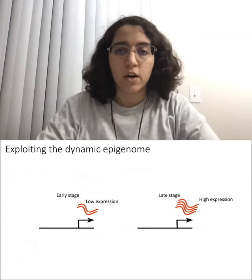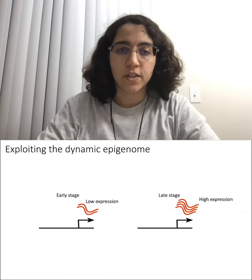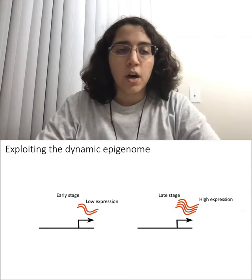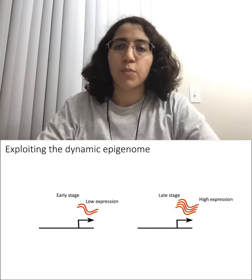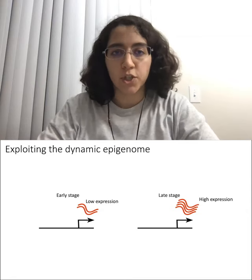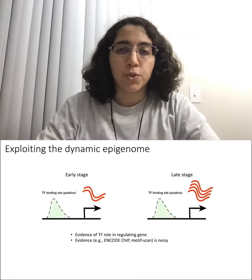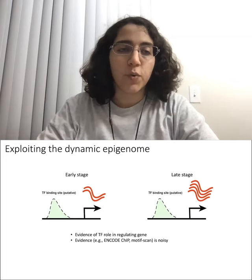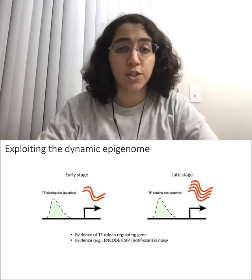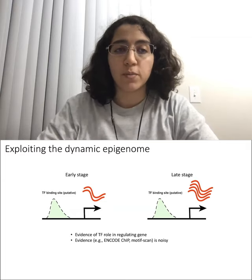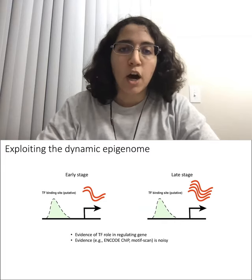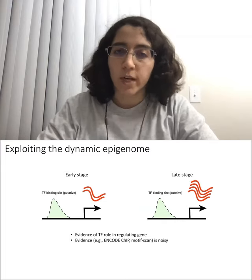To find the TFs that are relevant to CRC invasiveness, we first need to look for genes that are differentially expressed between the two stages of progression, and then find the TFs that regulate these genes. One approach is to test for the enrichment of TF binding sites close to the differentially expressed genes. However, the problem with this approach is that the TF binding site itself is a poor predictor of functional TF-gene regulation.